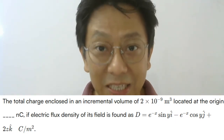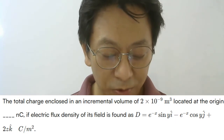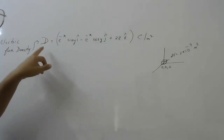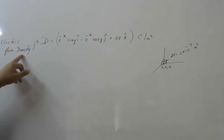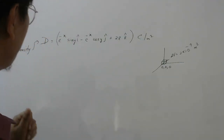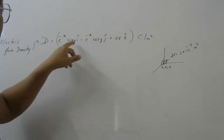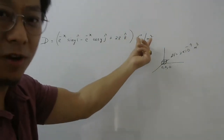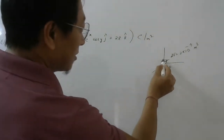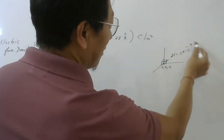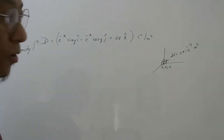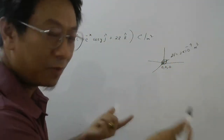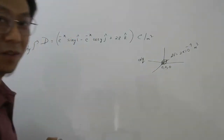The electric flux density of the field is found to be D equal to some function they have given. They are calling this quantity capital D as electric flux density — not electric flux, remember. The function given is e^(−x) sin y î − e^(−x) cos y ĵ + 2z k̂, in units of coulomb per meter square. At the origin there is a small volume of magnitude 2×10⁻⁹ meter cube; we have to find the charge dq in this volume.